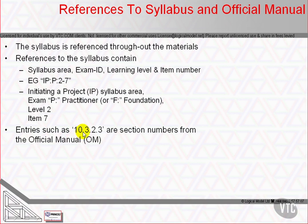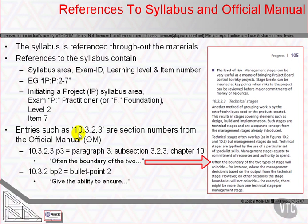Any time you see an entry such as 10.3.2.3, these are section numbers from the official manual. So within chapter 10, if we look at 10.3 — chapter 10 is Progress — and within 10.3, 2.3 gives us technical stages. So 10.3.2.3 is the conversation about technical stages within the official manual.